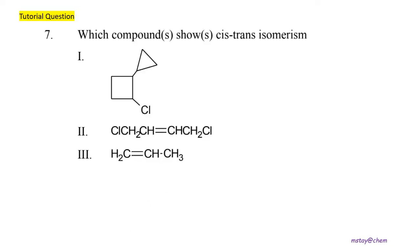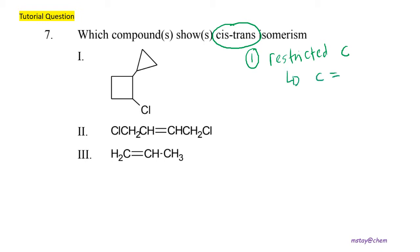Tutorial question number seven — objective question: which compound shows cis-trans isomerism? To fulfill the requirement for cis-trans isomers we have two requirements. First is a restricted carbon, which can be found in two conditions: either a carbon-carbon double bond or a cyclic compound. Based on this first requirement, all three options have the possibility.